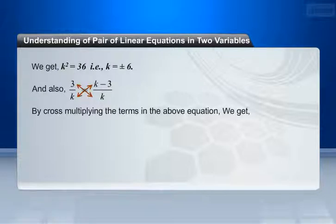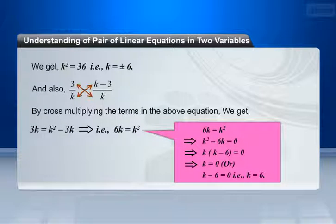By cross multiplying the terms in the above equation, we get 3k = k² - 3k.